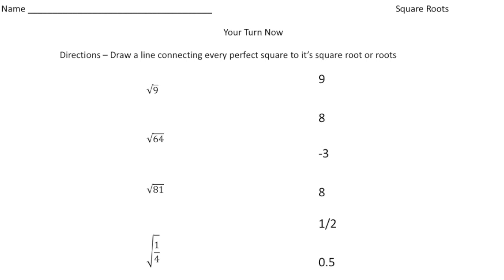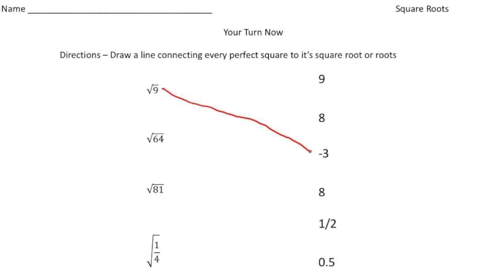Welcome back. Let's go over the practice problems. We wanted to draw a line connecting every perfect square to its square root or roots. The first one is the square root of nine — the square root of nine is going to be three and also negative three. Let's draw a line down to negative three.